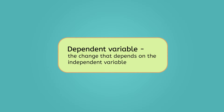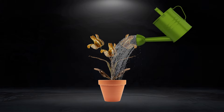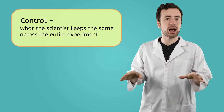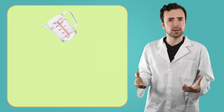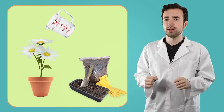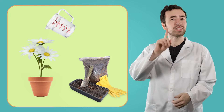The dependent variable is the change that depends on the independent variable, or the part changed by the scientist. Chances are the daisy in the dark room will stop growing, so its growth depends on the amount of light. But what if I forgot to water the plant in the dark room? If it stopped growing, it might be because it was thirsty, not because it was dark. That's where the other part of experiments comes in: the control. A control is something that the scientist keeps the exact same throughout the entire experiment. In this experiment, I would want the amount of water given to each plant to be a control. I would also want to use the same kind of plant, the same kind of pot, and the same kind of soil. As you can see, one experiment can have lots of different controls, and they help the scientist make sure they're only testing one thing at a time.